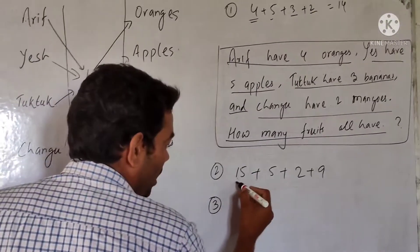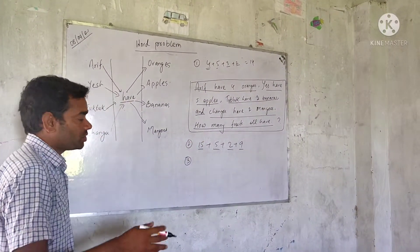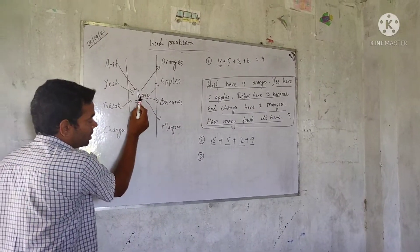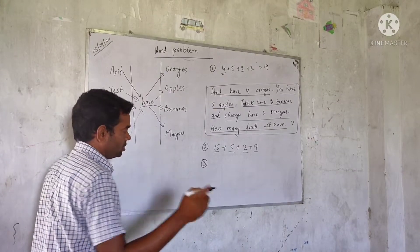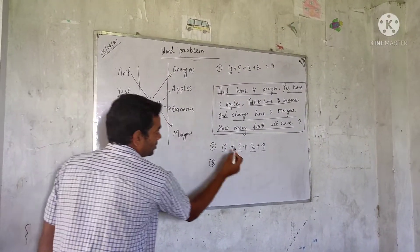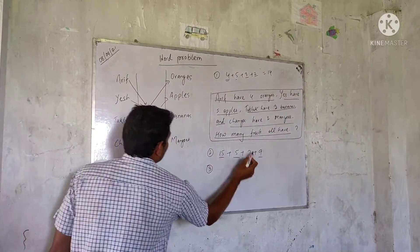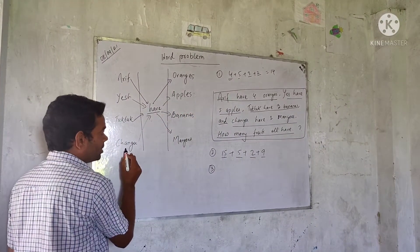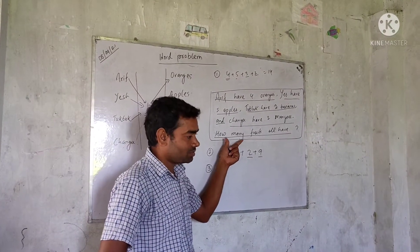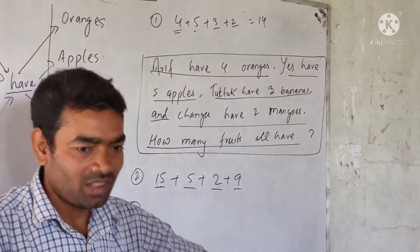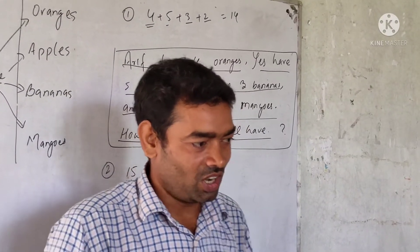Now you have to change this question into a word problem. The last line will be: how many fruits are there? This is your word problem. Yes sir. Okay, done.